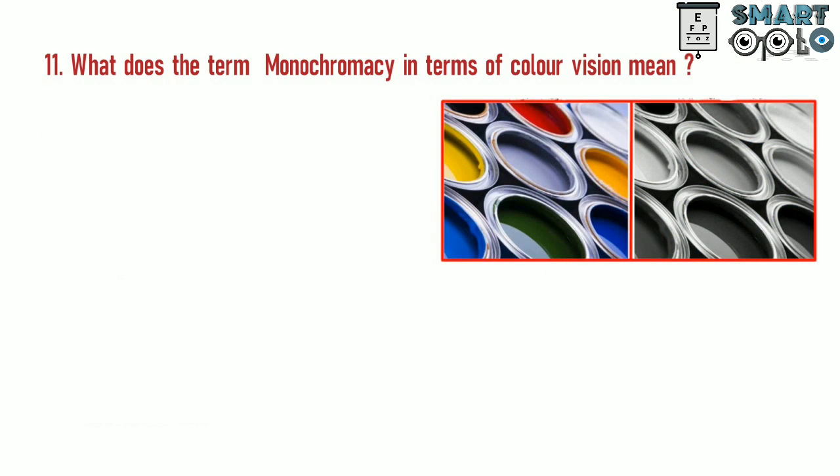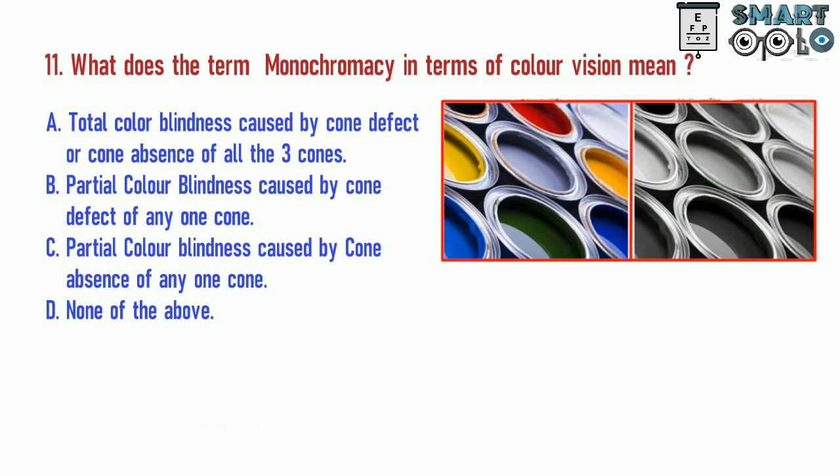Question 11. What does the term monochromacy in terms of color vision mean? A. Total color blindness caused by cone defect or cone absence of all three cones. B. Partial color blindness caused by cone defect of any one cone. C. Partial color blindness caused by cone absence of any one cone. D. None of the above.